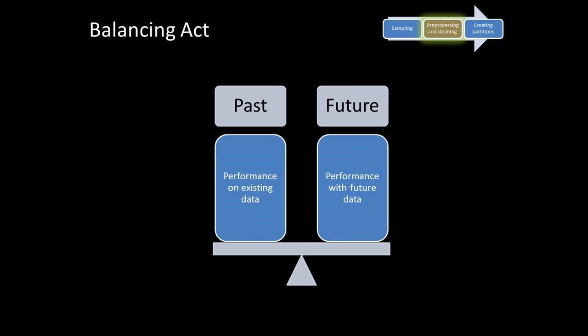So there's a trade-off involved. Performance in the past — good performance in the past — might actually lead to poor performance on future data. Of course, you don't want to build a really horrible model that comes nowhere close to the training data either — that would be useless. But you also don't want a model that so exactly matches the training data that it cannot perform well on validation or future data.